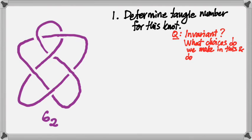Do these choices potentially affect our answer? Because what we don't want is a way of determining an invariant for a knot that actually isn't an invariant. If you and I can follow the same process but make different choices and get different answers at the end of the day, then this is not a good procedure for classifying knots. So first I want us to work through this exercise a couple of different times, making different sets of choices, and then figure out whether those choices did end up mattering or not.